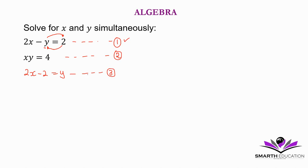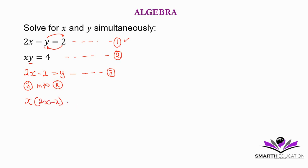And then we can substitute equation 3 into equation 2 — so it's 3 into 2. Where there's y, we put 2x minus 2. So it becomes x times 2x minus 2 is equal to 4.